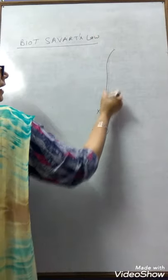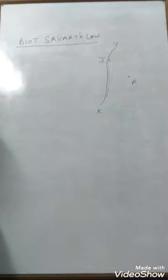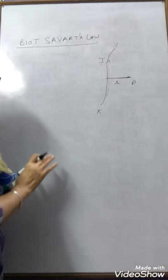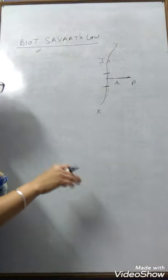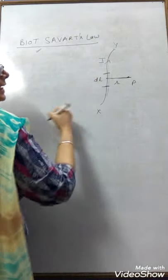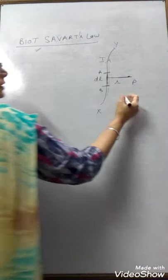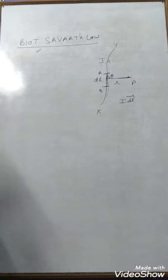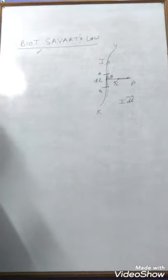This is a current-carrying conductor XY carrying current I. This is our observation point where we have to calculate the magnetic field produced by this conductor, at a distance R from the conductor. To use this law, we first consider a small part of this length called the current element — that is DL. The IDL vector is the current element in the direction of current. The angle theta is between the current element direction and the unit vector of the observation point P.